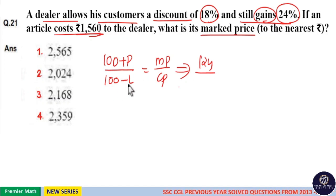Now, 100 minus loss means 100 minus 18. When you give a discount of 18%, you are losing that 18%. So, 100 minus loss of 18% equals 82%. Now, this is the marked price to cost price ratio.